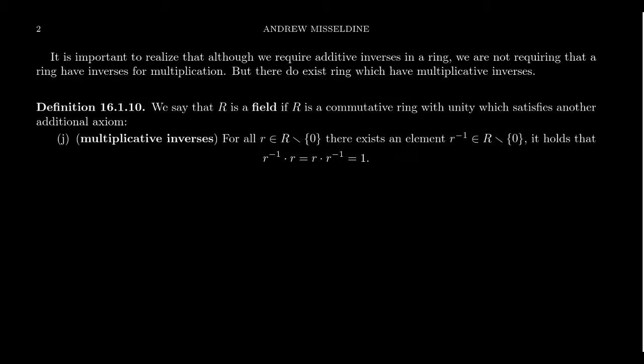But there do exist rings for which we could require multiplicative inverses. So remember, the axioms of a ring tell us that with respect to addition, we have an abelian group. It's associative, commutative, identity, inverses for addition. With respect to multiplication, the only thing we require for a ring is that the multiplication be associative and multiplication distributes over addition from the left and from the right. That's basically it. That's all that we require when it comes to rings.